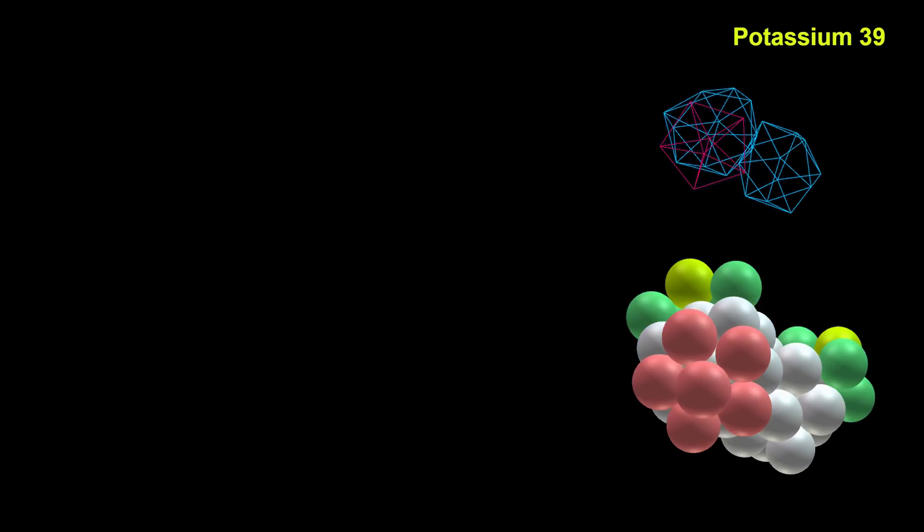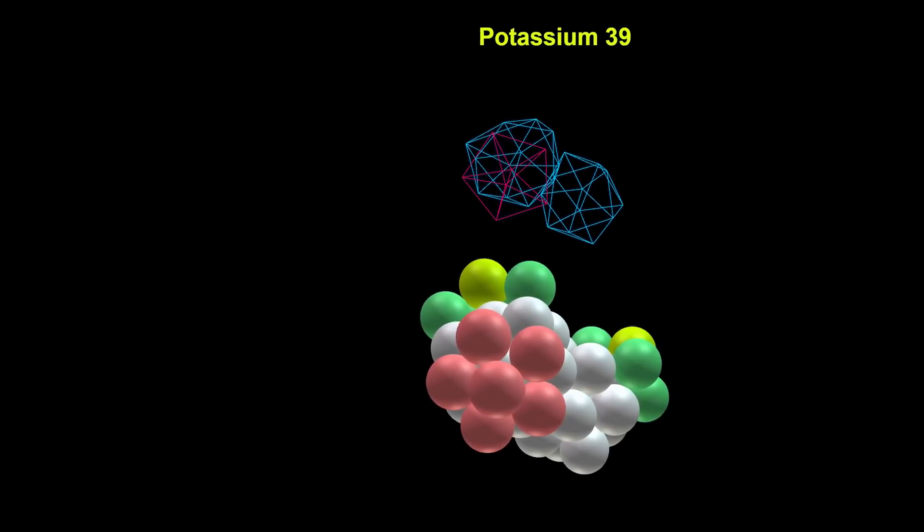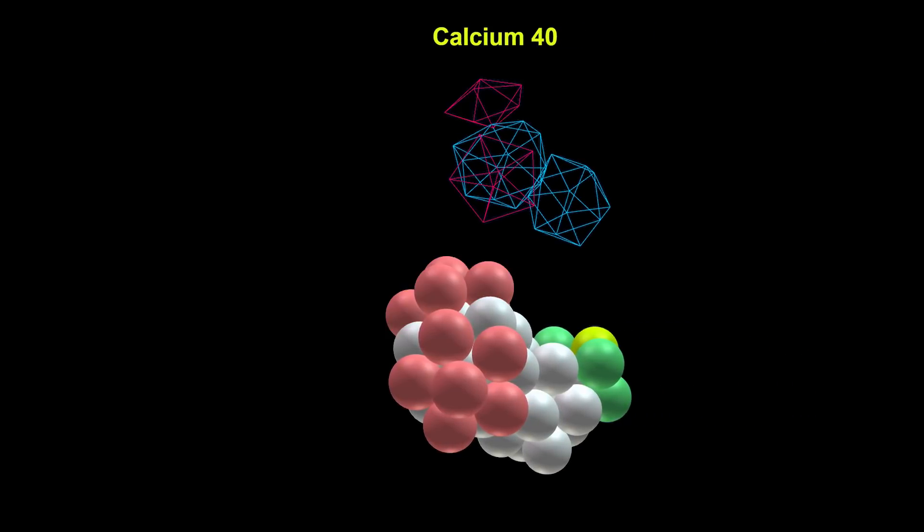Potassium is the next alkali metal. This has a lithium nuclet on one side. Moving on to calcium we see there are now two lithium nuclets and this creates the first branch in the structure.